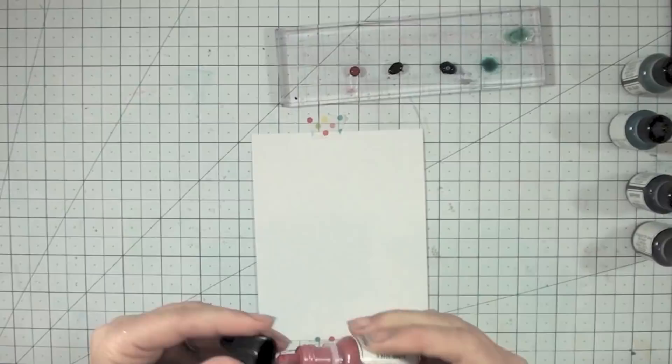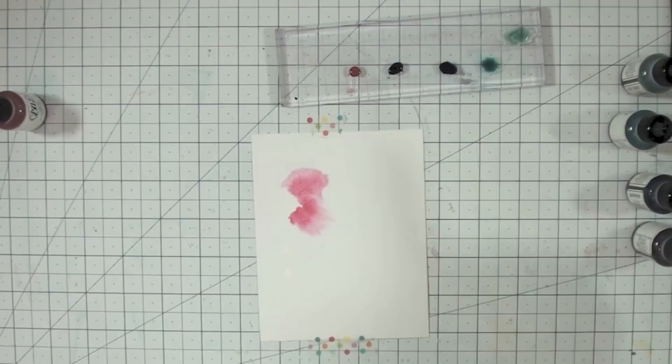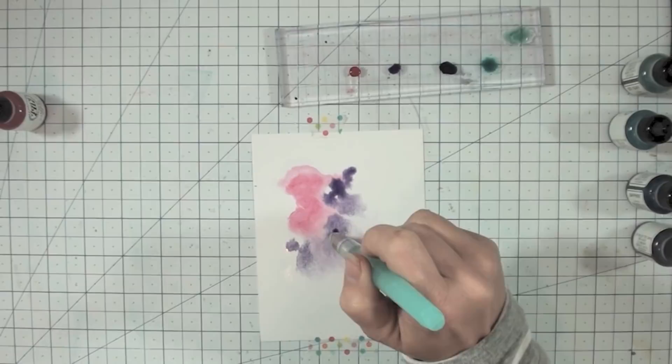So the first thing I'm gonna do is go ahead and prep my watercolors. Now I'm using the Avery liquid watercolors for this and then I'm gonna prep my background. To prep that, I just add water to my watercolor paper and get it ready to receive the watercolor.